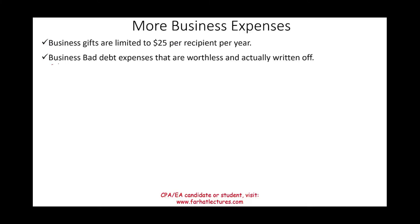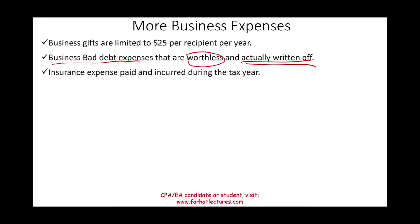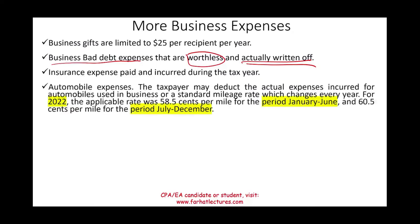Bad debt expense: if someone owes you money and cannot pay, it is deductible if it is worthless and actually written off. For tax purposes you cannot estimate bad debt — it uses the direct write-off method; it has to actually happen. Insurance expenses — for cars, equipment, machinery, malpractice insurance — are deductible as long as they are business-related.